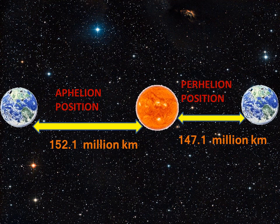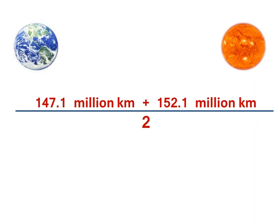So, the average distance is about 149.6 million kilometers. This average distance is taken as one astronomical unit.